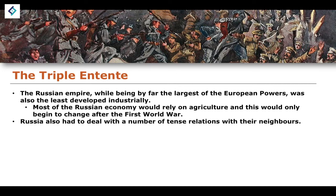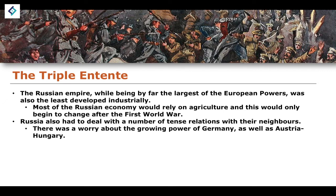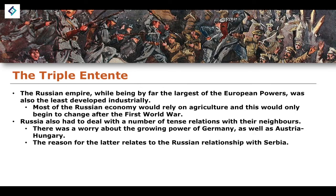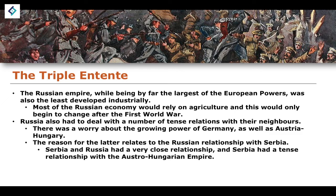Russia also had to deal with a number of tense relations with its neighbours. They had to worry about the growing power of Germany, as we would understand. But also the growing tensions that existed with Austria-Hungary, because Austria-Hungary was in very tense relations with other Eastern European Slavic states like Serbia — and because Russia aligned themselves with Eastern European Slavic states such as Serbia, we start to see more and more tensions grow in that region as well. Serbia and Russia had a very close relationship, while Serbia had a tense relationship with the Austro-Hungarian Empire.